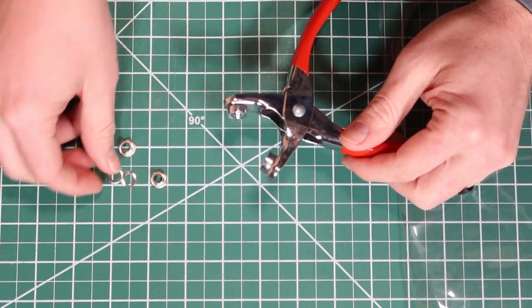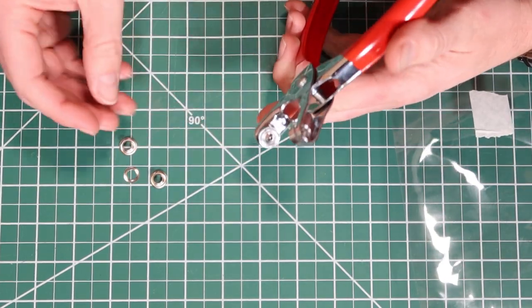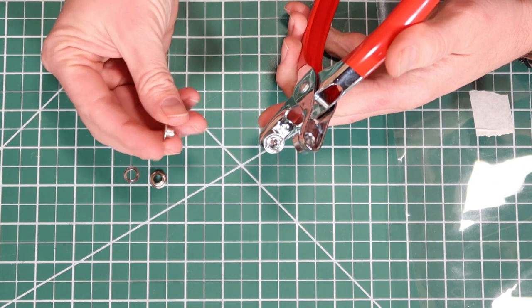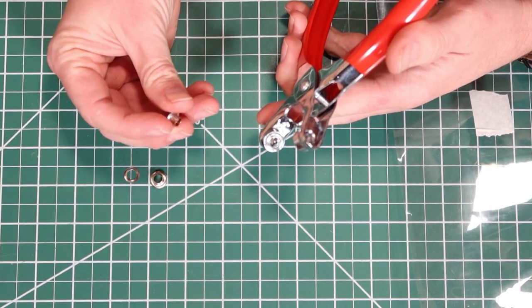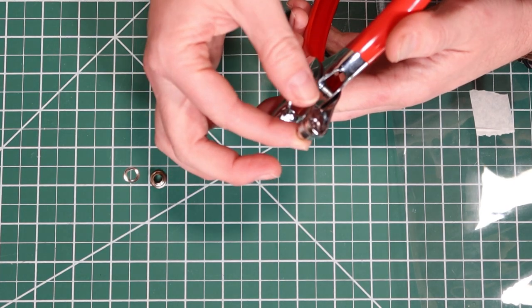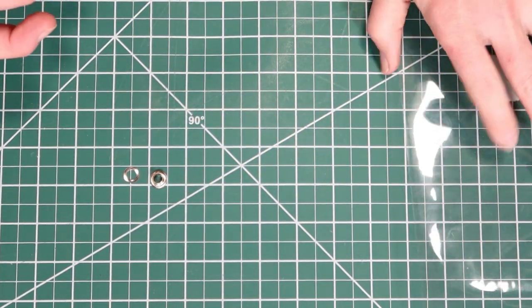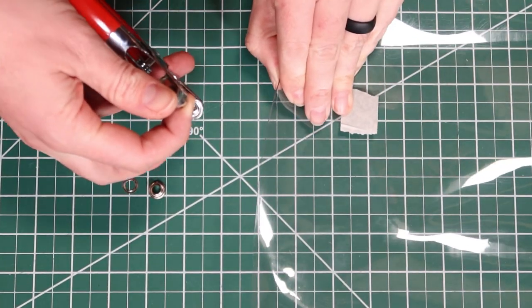If you take the little washer here and put that over the cone, and then the other side is the actual eyelet or grommet, that's just going to go up on the other side. To get this to actually punch into something like this vinyl here...